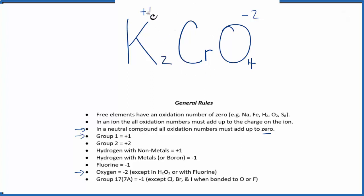So we have 2 times plus 1, that's 2, plus we don't know the oxidation number of the chromium, and then we have 4 times minus 2, that's minus 8. Like we said, all of that has to add up to 0.